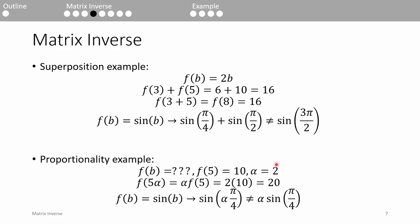If the problem wants us to find the value of f of 5 alpha, we can't plug in 5 times alpha into the equation because we don't know what the equation is. But proportionality tells us that f of 5 alpha equals alpha times f of 5, and we know f of 5, so we can solve the problem in that way.